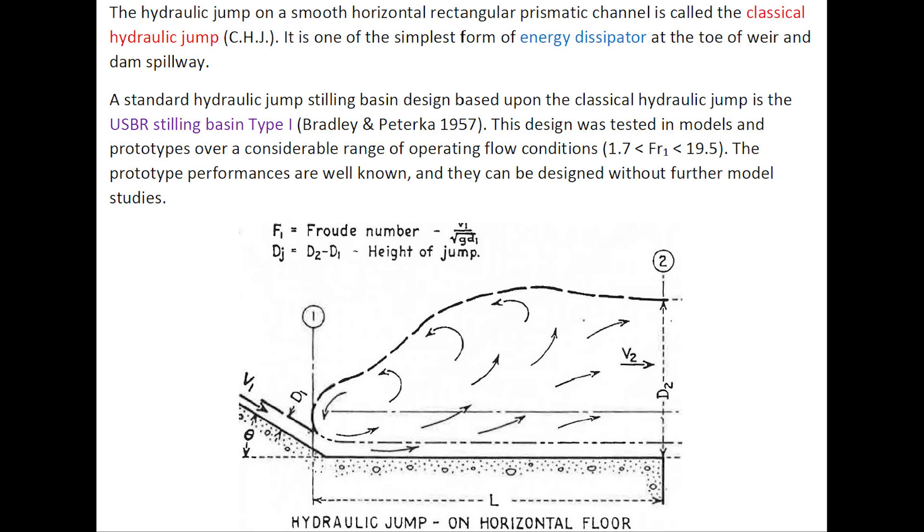The hydraulic jump on a smooth horizontal rectangular prismatic channel is called the classical hydraulic jump. It is one of the simplest forms of energy dissipator at the toe of a weir or dam spillway. A standard hydraulic jump stilling basin design, based upon the classical hydraulic jump, is a USBR Stilling Basin Type 1.